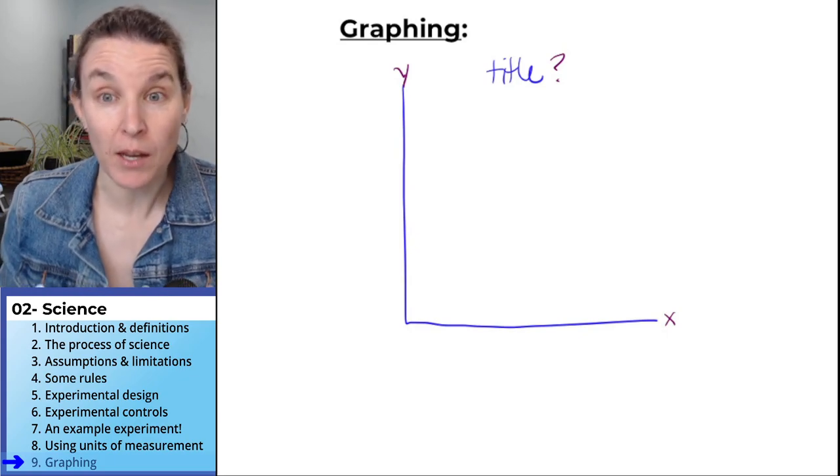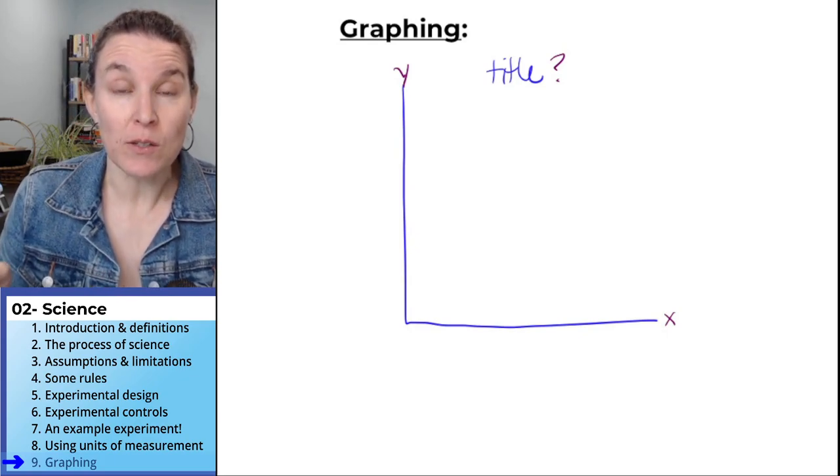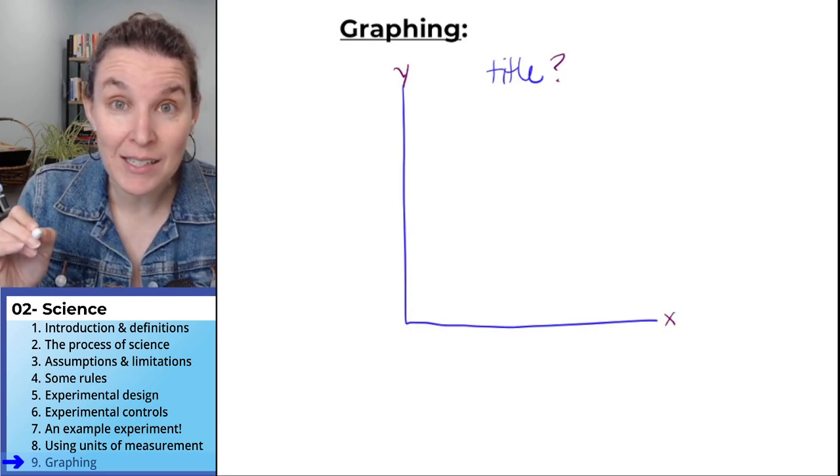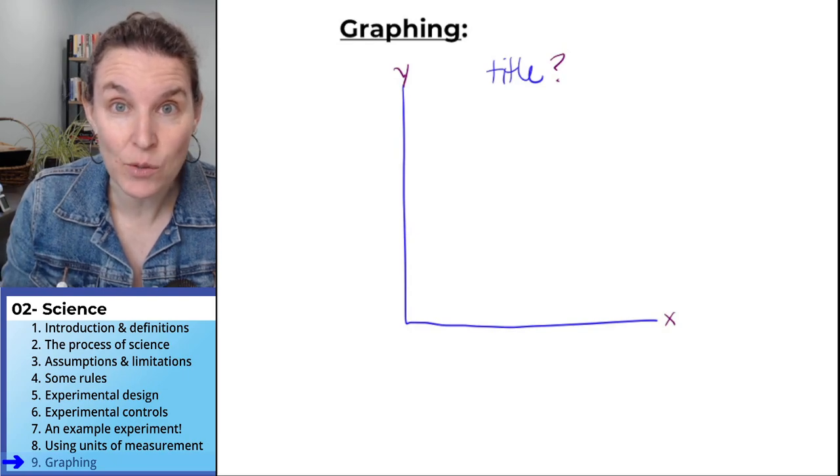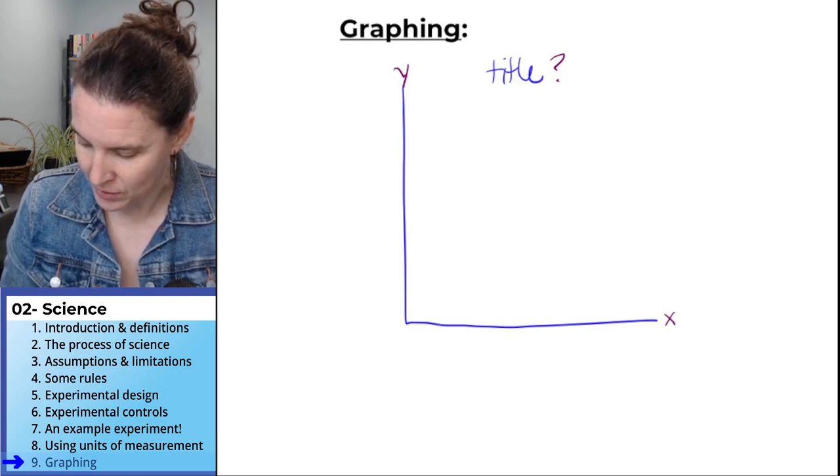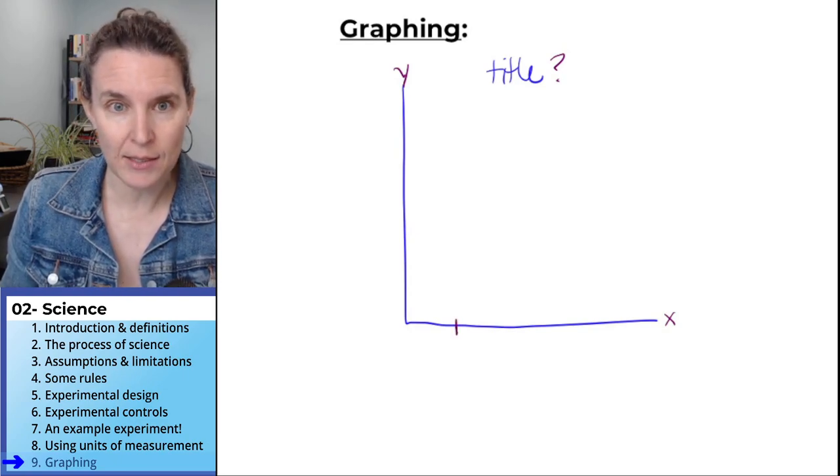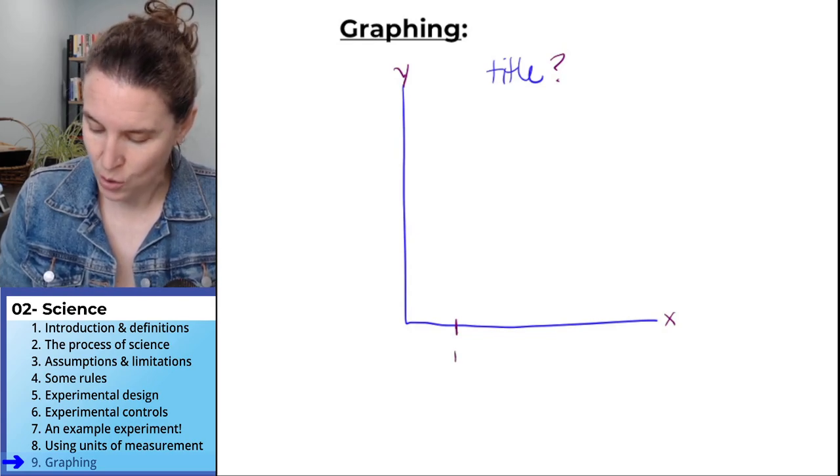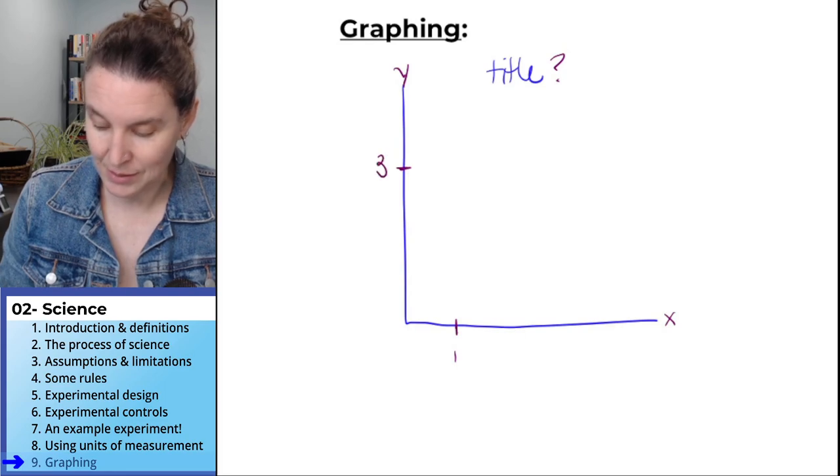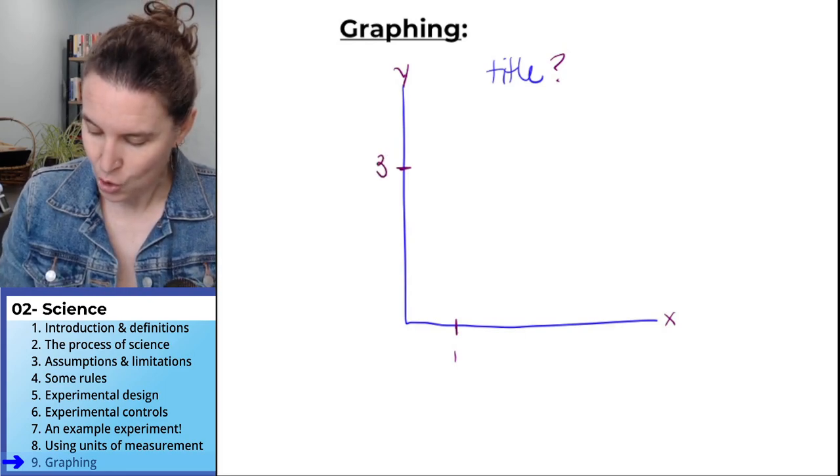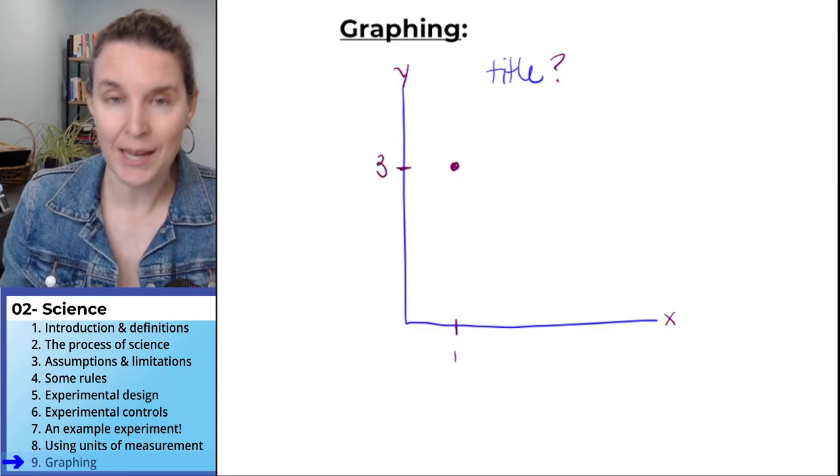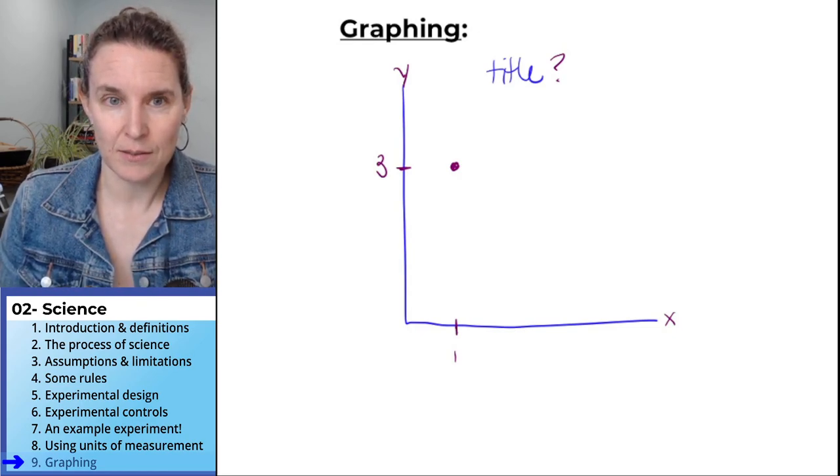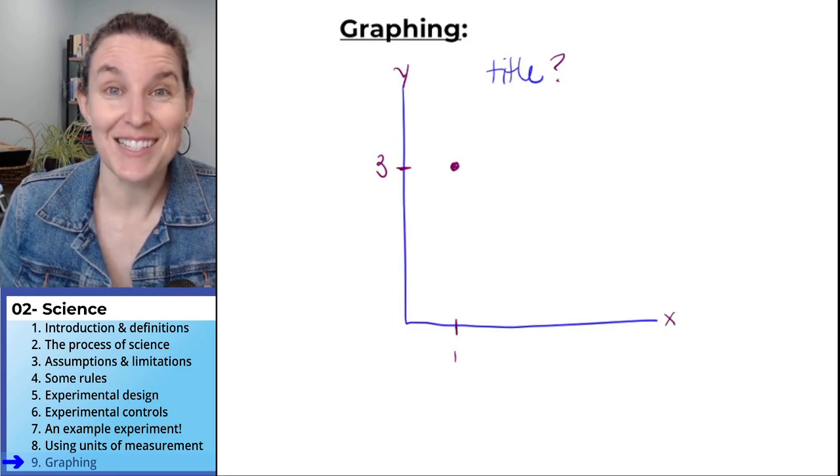You are going to plot. Every point that goes on the graph is going to have a number on the x-axis and a number on the y-axis, and that's how you determine where it goes on the graph. So if your x is, let's just say it's one, and your y is, let's say it's three, your point goes at an x of one and a y of three. Okay, that's easy. This is the part that's cool.